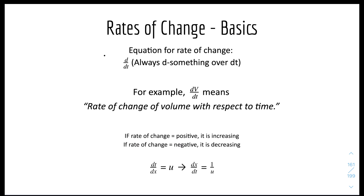So we have an equation for the rate of change, which is always d over dt — like d-something over dt. For example, dV over dt, where V stands for volume. To say it verbally, it will be 'the rate of change of volume with respect to time.' So d-something over dt is the rate of change of that thing with respect to time. One thing to note: if the rate of change is positive, then that quantity is increasing, but if the rate of change is negative, it is decreasing.